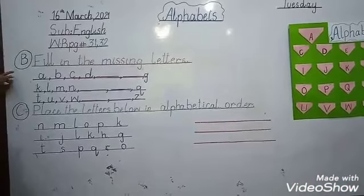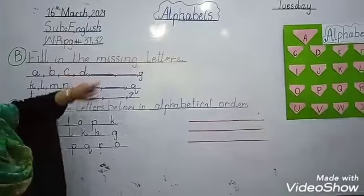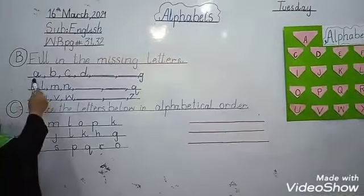We have T letter, so write here T. Students, start B part, fill in the missing letters. We have to have A, B, C, D.